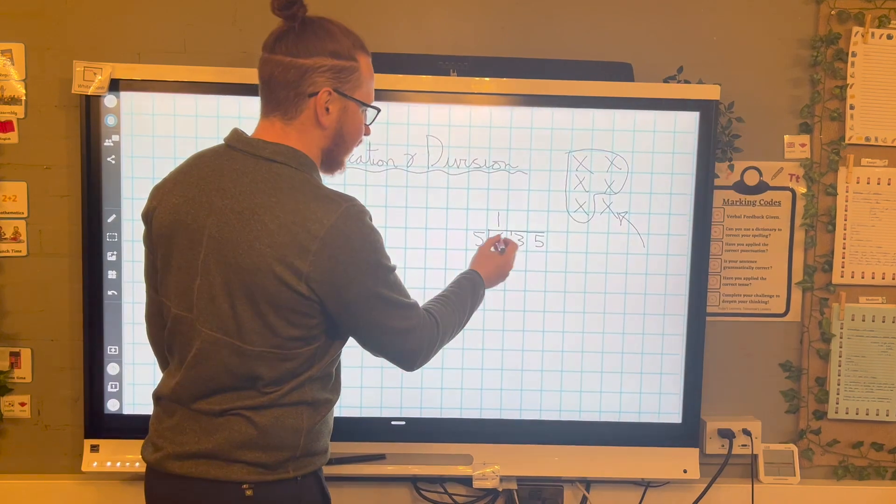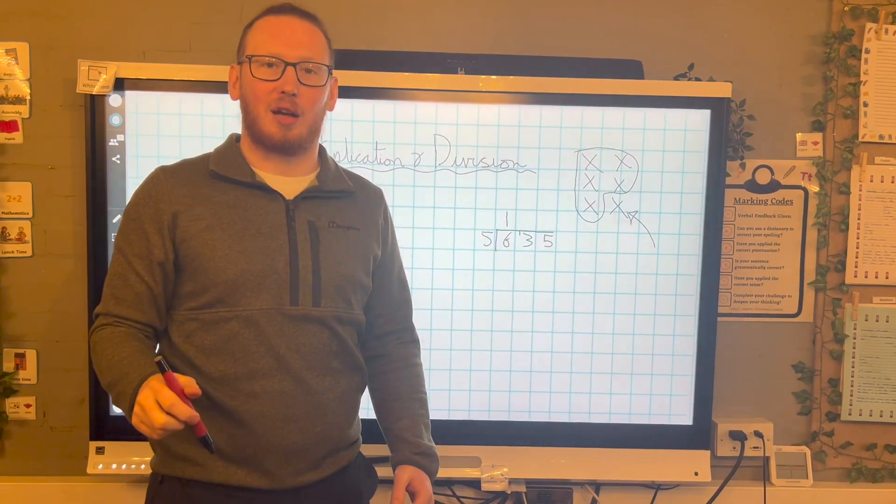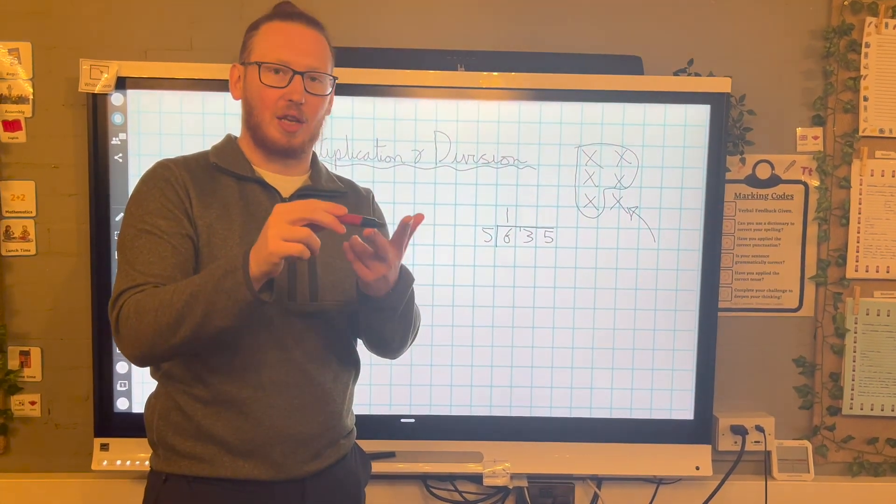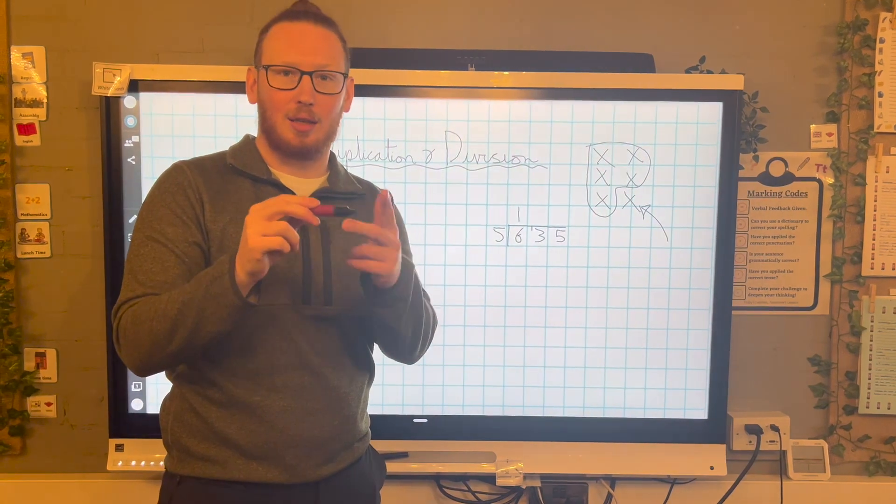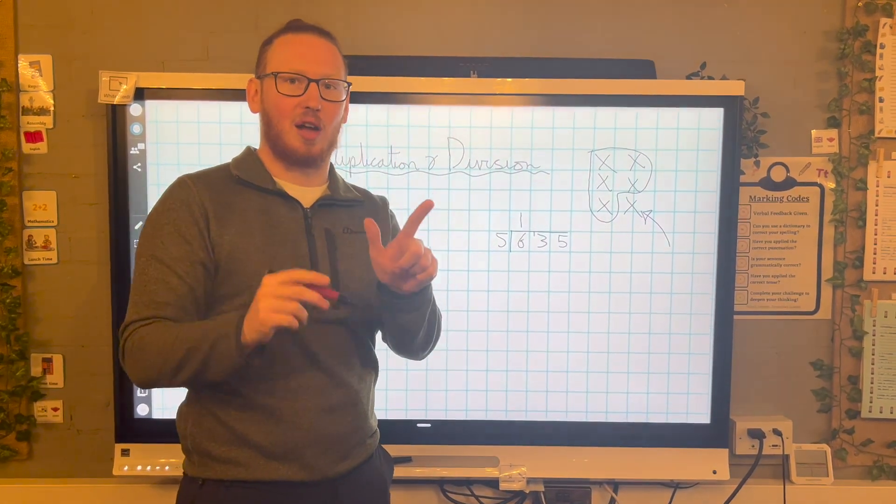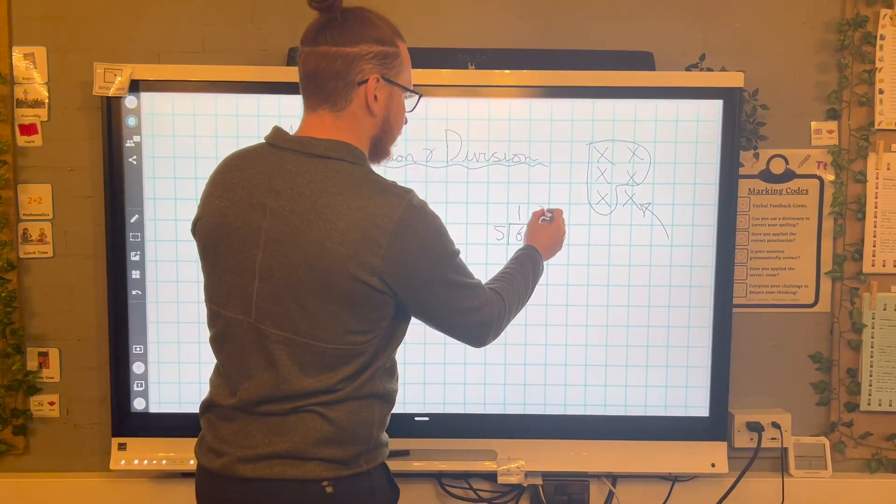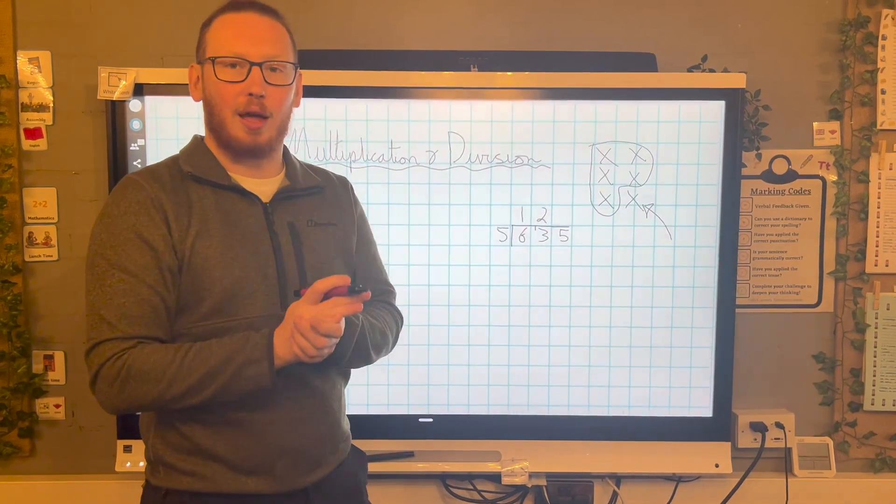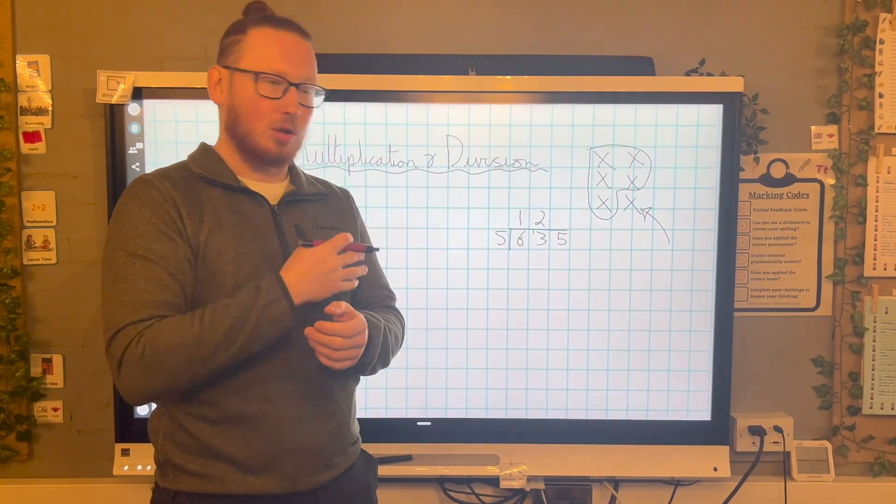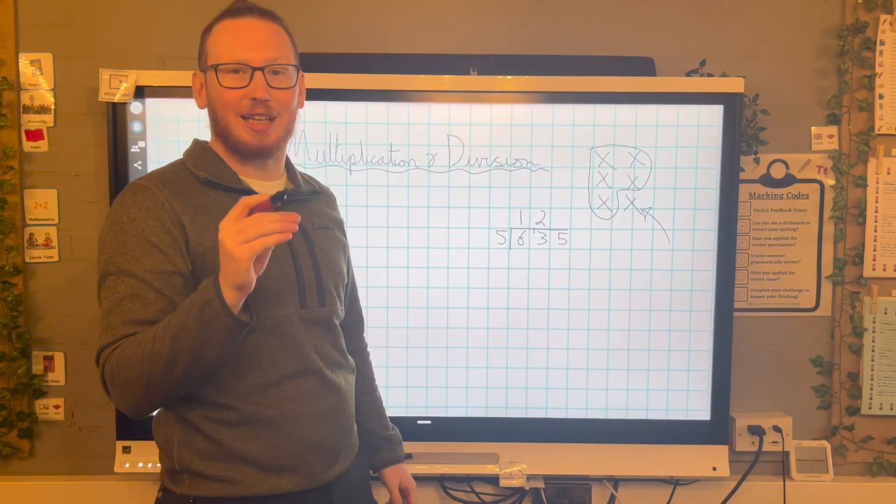Next step, how many fives go into 13? So we count up in our fives. We go five, 10, 15 is too many. That means I can fit two fives into 13. And then we know two times five is ten. We've got three left over.